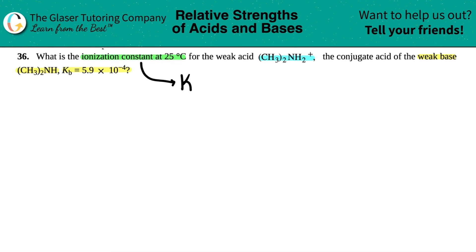But in this case we want to find the ionization constant for the acid, so A for acid. Here's the acid, that's why it's A. So we're trying to solve for the Ka.